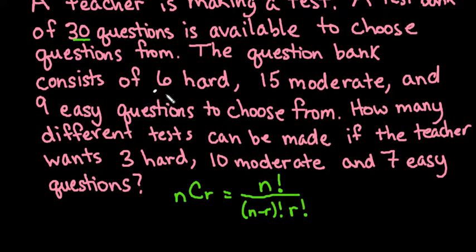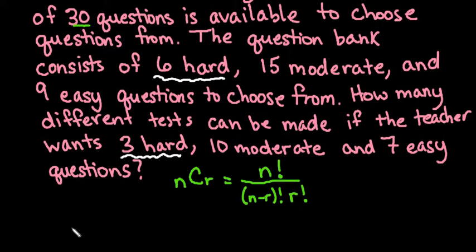So what we have here is we have 6 hard questions to choose from and we want to select 3 of them. So our first one that we would set up is 6 things taken 3 at a time.